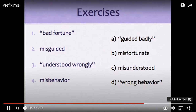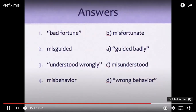We are ready to review the answers to the exercises. Number one, bad fortune — the word is misfortunate. Number two, misguided means guided badly. Number three, understood wrongly is misunderstood. And four, misbehavior is wrong behavior. Feel free to go back and review any portion of the video if you'd like.